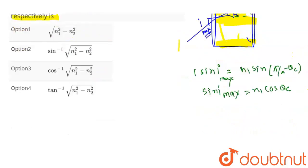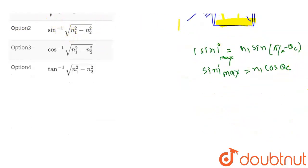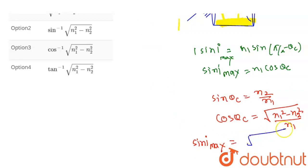If we see sin theta, we can write that as n2 upon n1. Cos theta is equal to root over 1 minus sin square theta. That is n1 square minus n2 square upon n1. Then we substitute cos theta here. So sin i maximum is equal to root of n1 square minus n2 square.